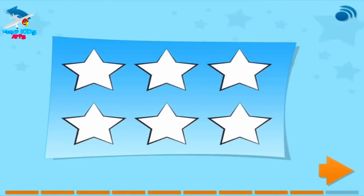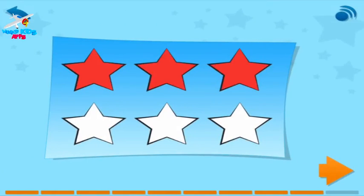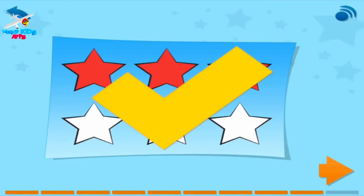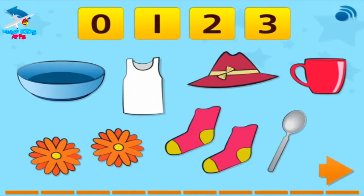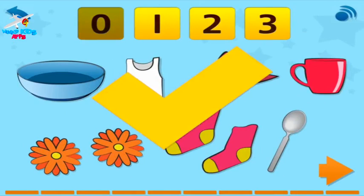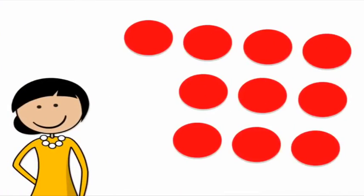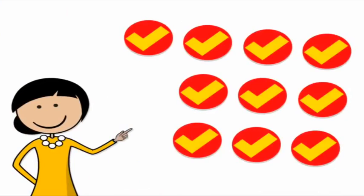Touch three stars, then touch the arrow. How many fish are there? Touch the number, then touch the arrow. You got all the questions right — ten out of ten! So you get a certificate.